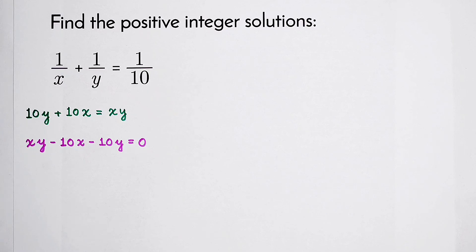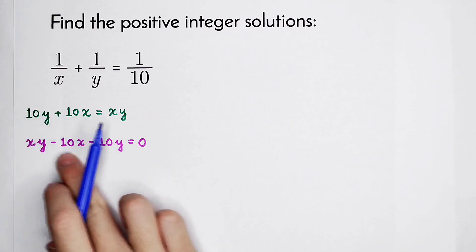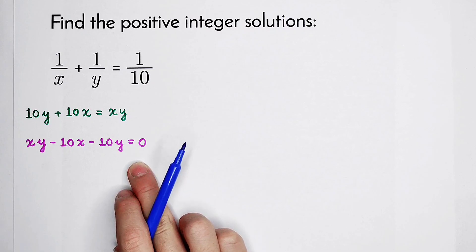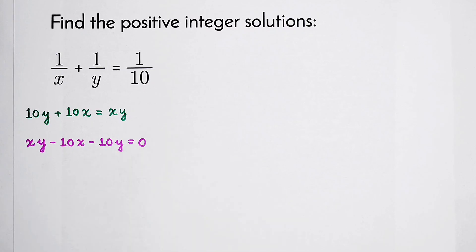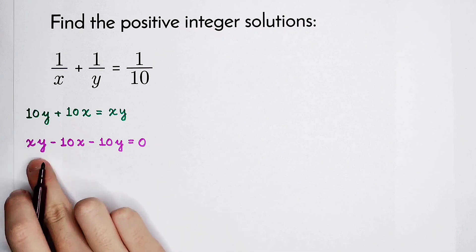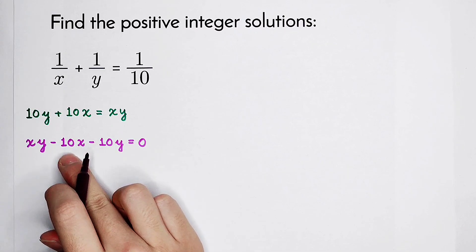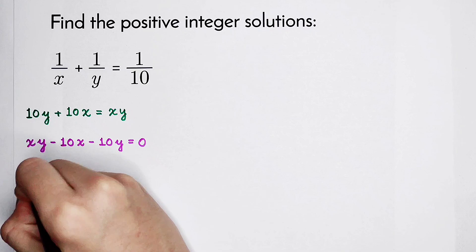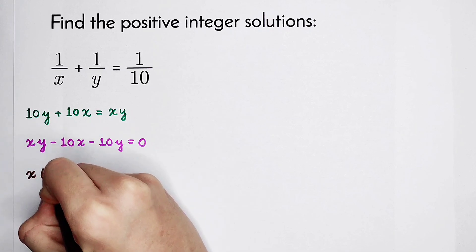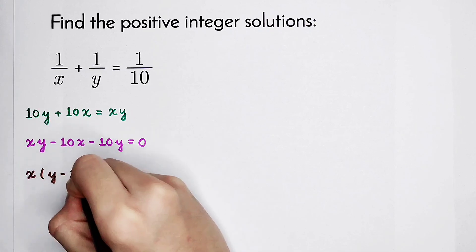Now our work is to factorize the left side. But how should we factorize it? From xy minus 10x, we can take out an x. That is x times, with the bracket, y minus 10.